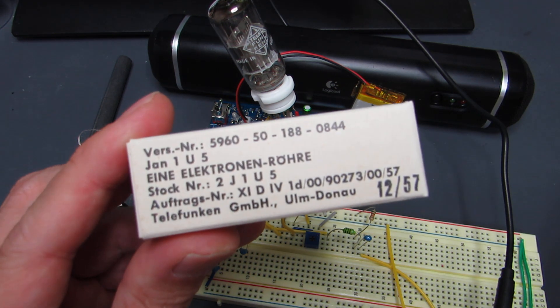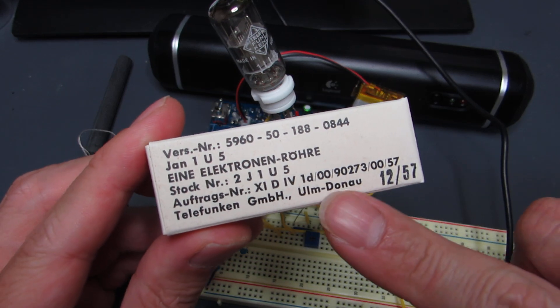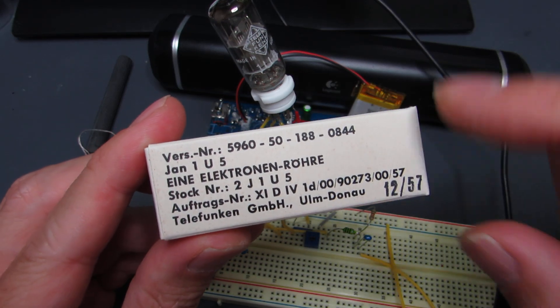This tube is made by Telefunken in Germany, in Ulm-Donau, in 1957. It's a very old tube.